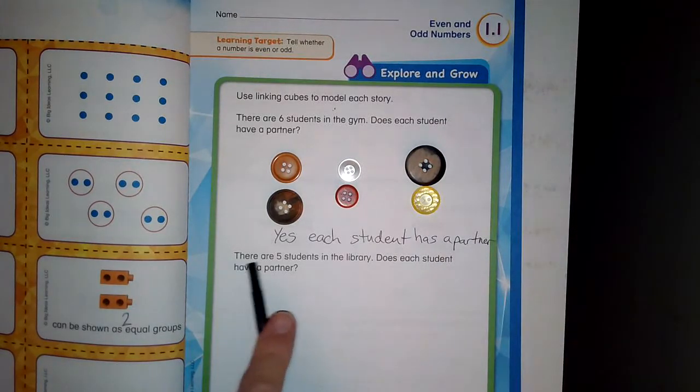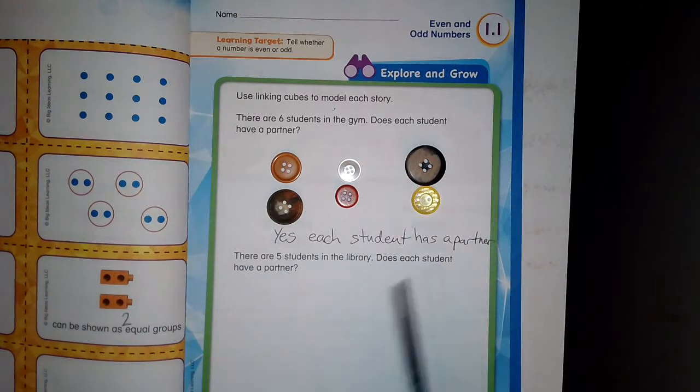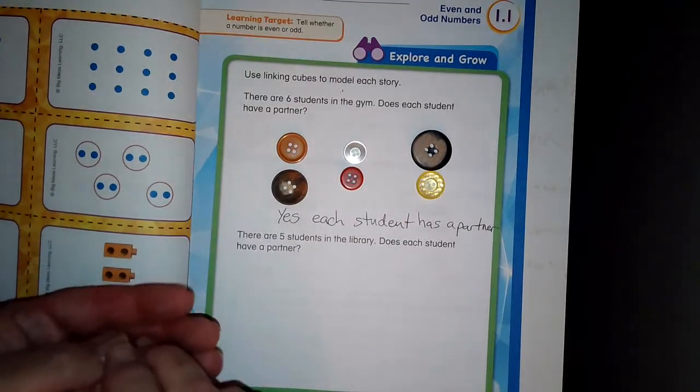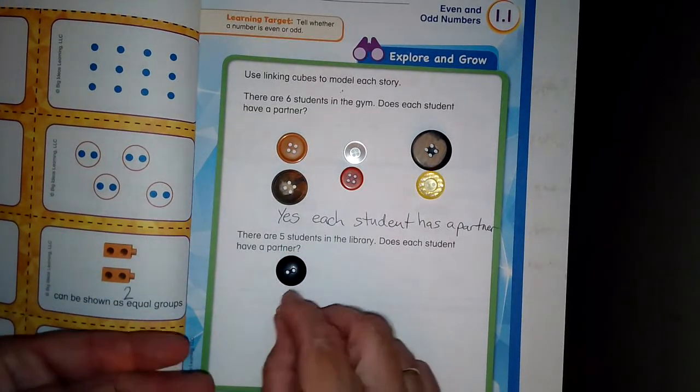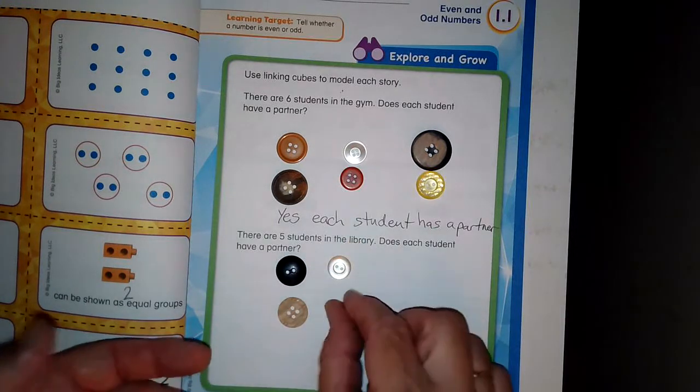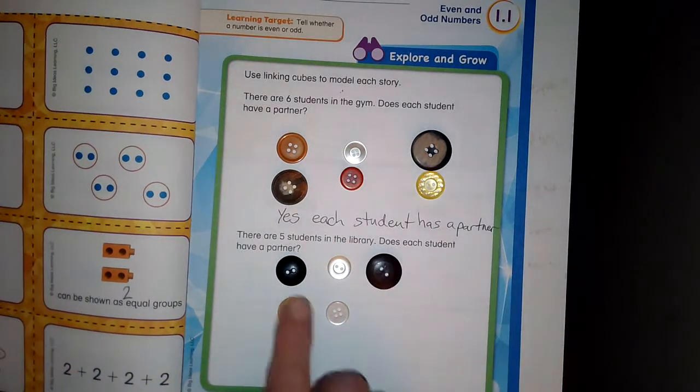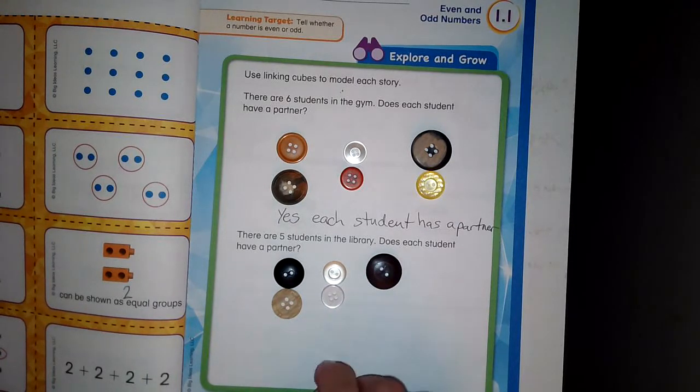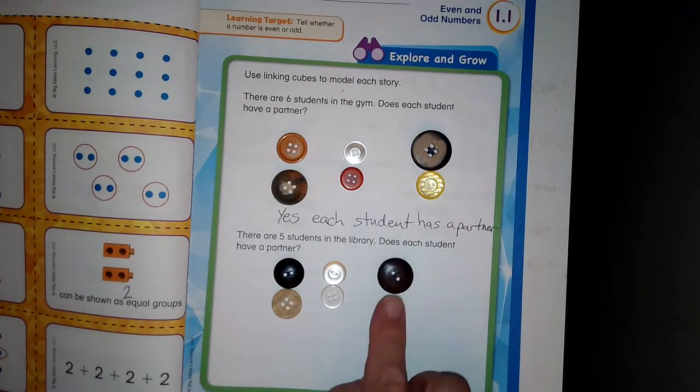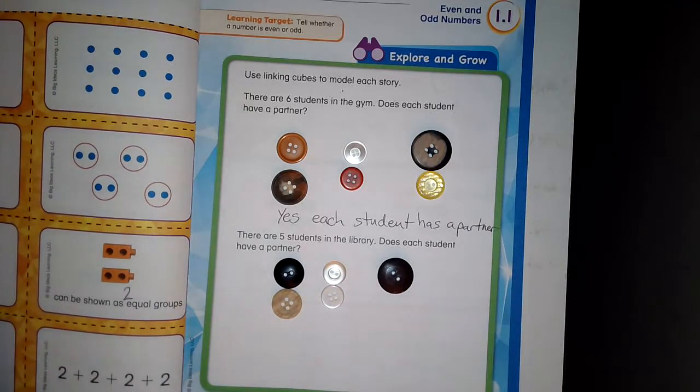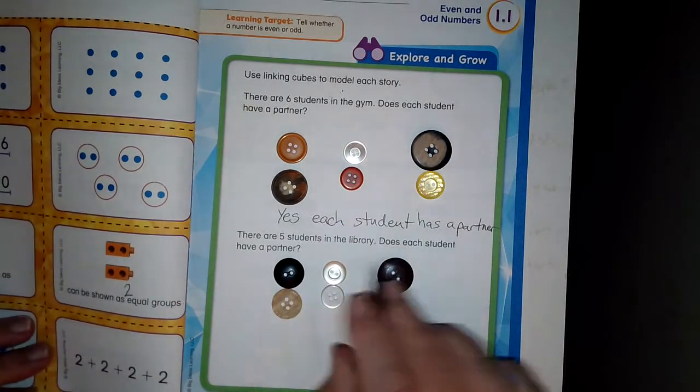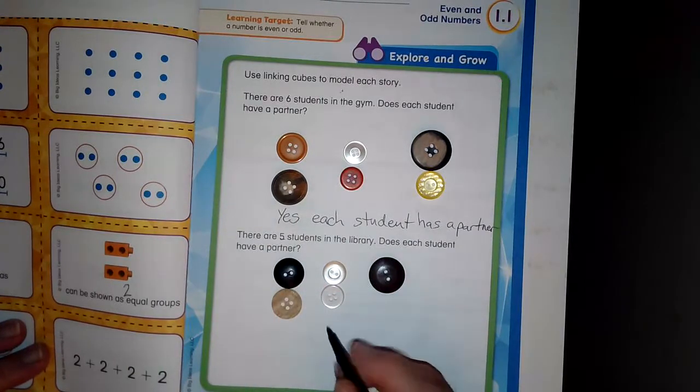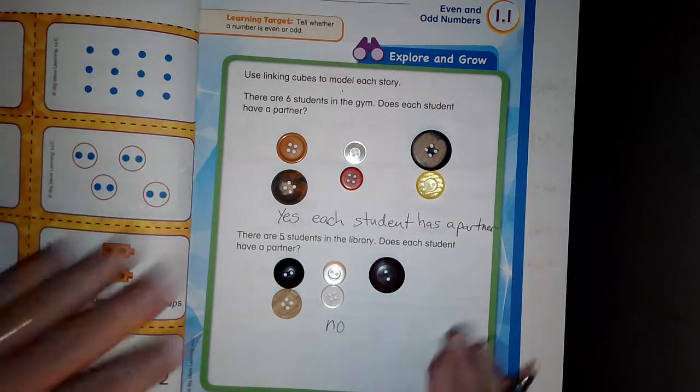Okay. Now, there are five students in the library. Does each student have a partner? And for that, I need five different. One, two, three, four, five. And I have this one and this one. They are partners. This one and this one are partners. And this one does not have a partner. So, the answer to this, does each student in five have a partner? The answer is no.